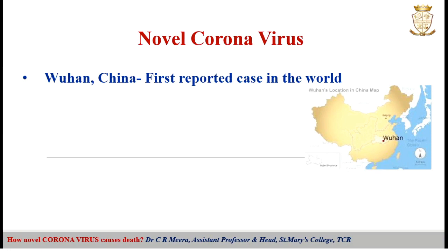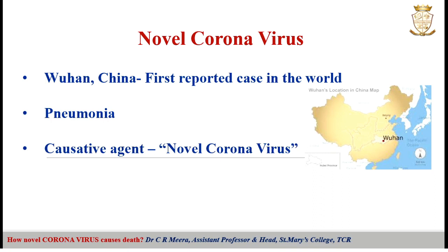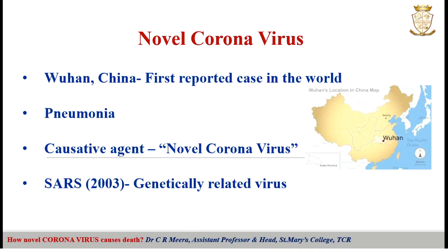Novel Coronavirus. The first case of coronavirus infection was reported in the Wuhan city of China. The disease appeared in the form of pneumonia and the causative agent was called novel coronavirus, as this virus had not been previously recognized in humans. The SARS outbreak in 2003 was also caused by viruses genetically related to novel coronavirus.